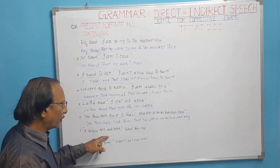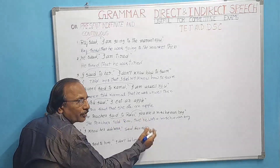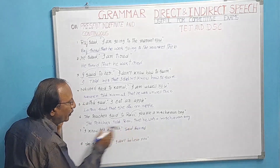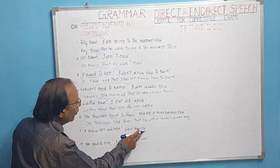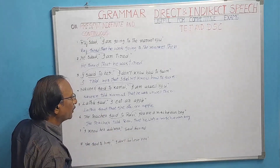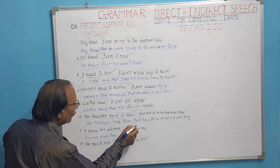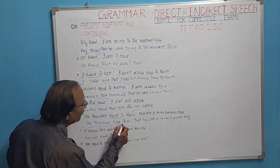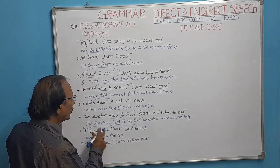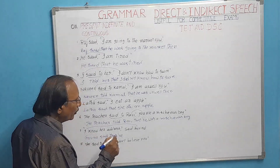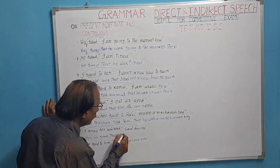'I know her address,' said Govind. Sometimes the reported verb appears after the inverted commas; even then we bring it to the front. Who said? Govind. So: Govind said that. 'I' refers to Govind, so the subject becomes 'he.' Simple present 'know' — V1 — changes to simple past 'knew' — V2. 'Her' does not change. Result: Govind said that he knew her address.